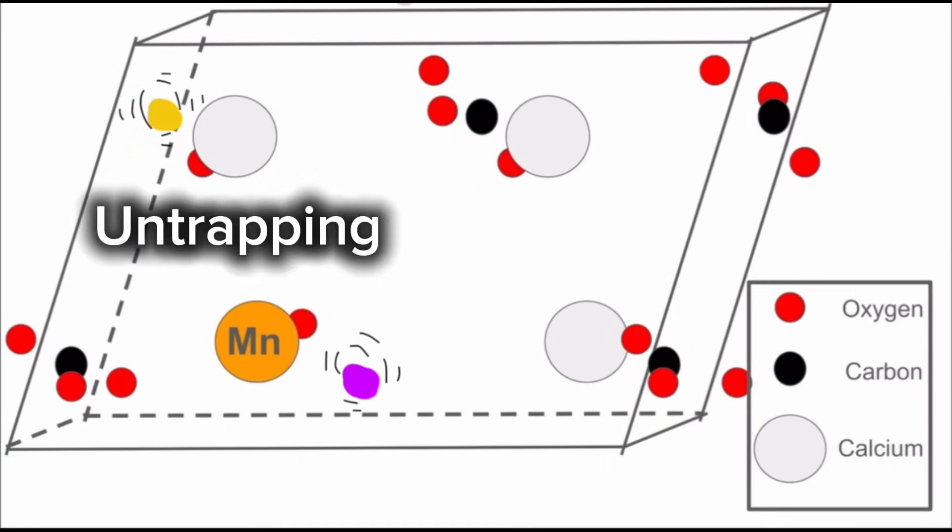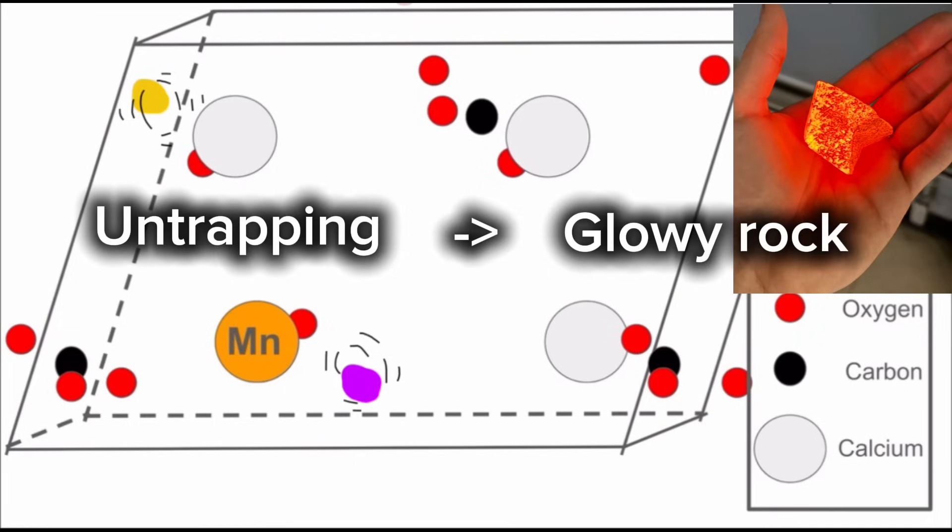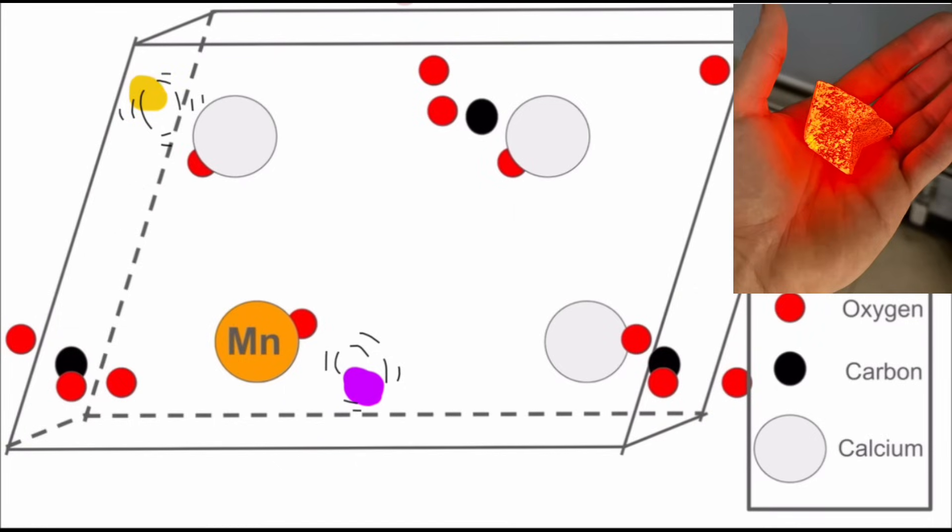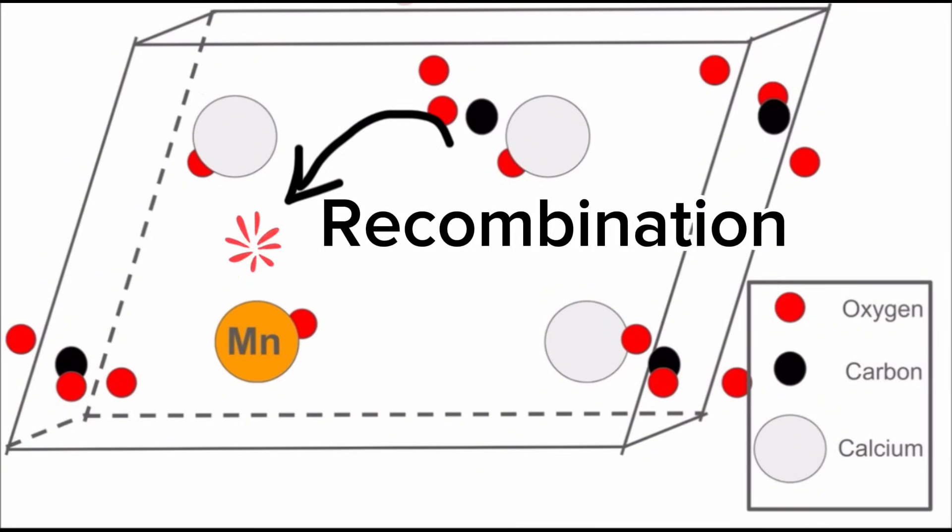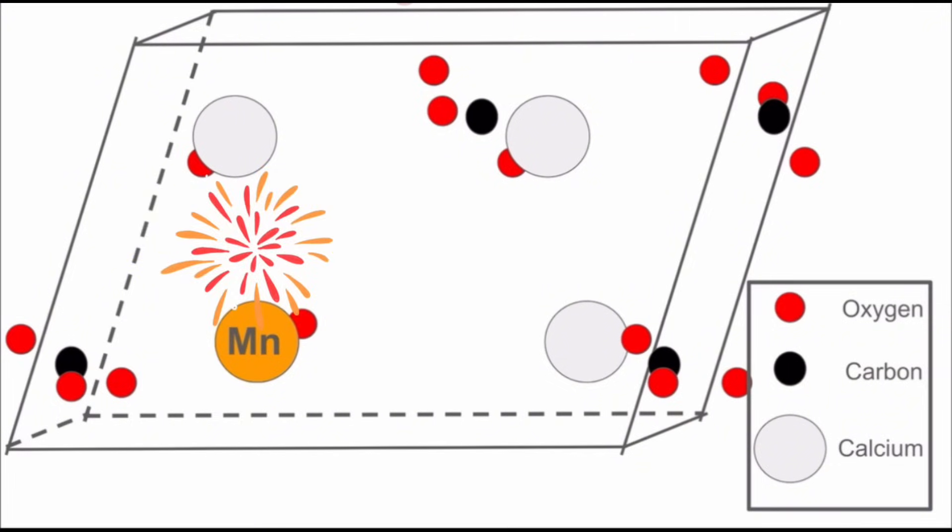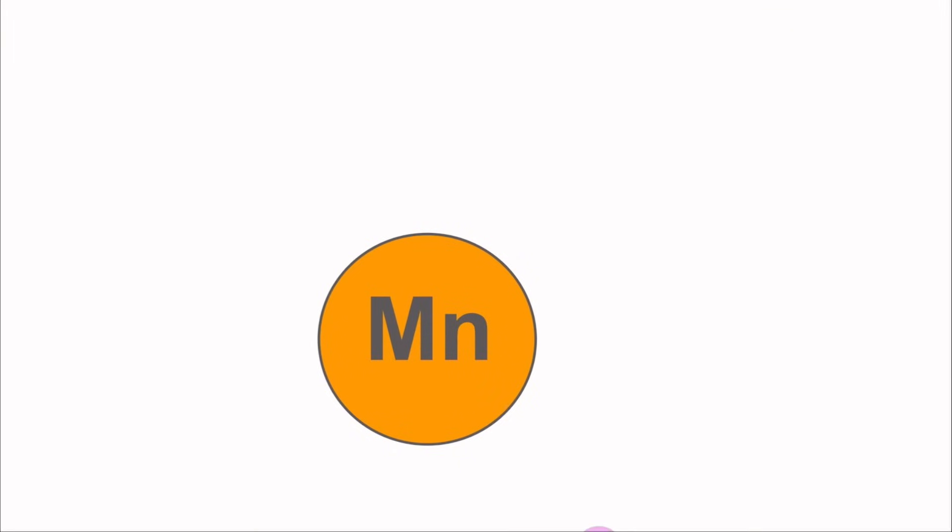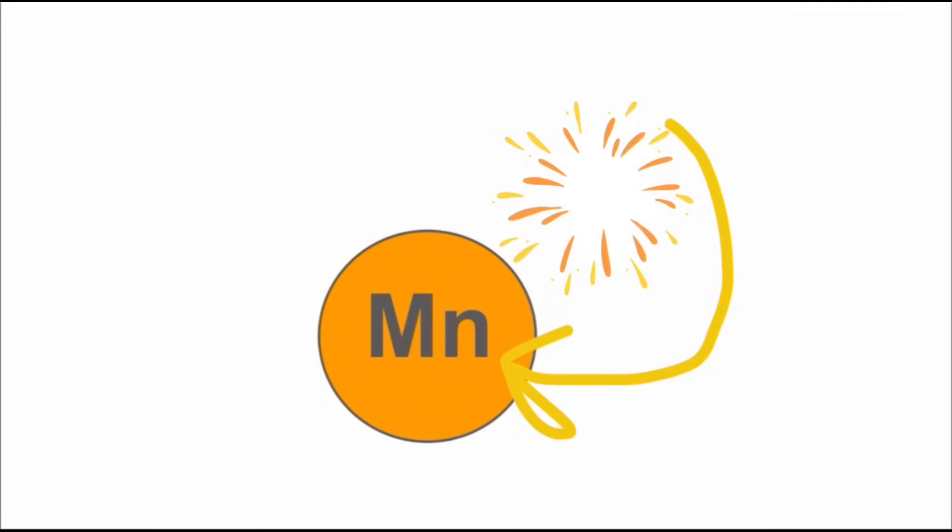And it is the untrapping of these electrons and holes from their traps that causes the glow in the calcite that we see when we take it out of the particle accelerator. When these two charge carriers have enough energy to untrap themselves, they quickly recombine. And when they do that, a good amount of energy is released. If this recombination occurs nearby manganese, the manganese can absorb some of the energy that was released during the recombination, and it itself can then be excited to a higher energy state.